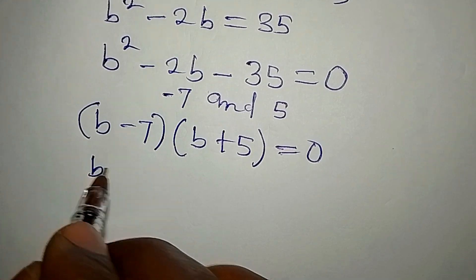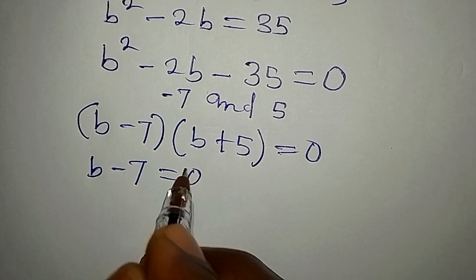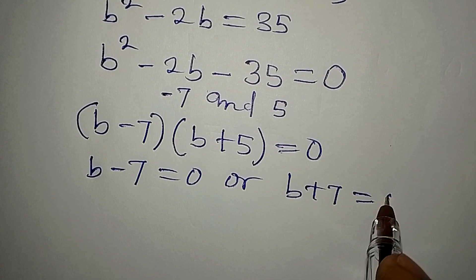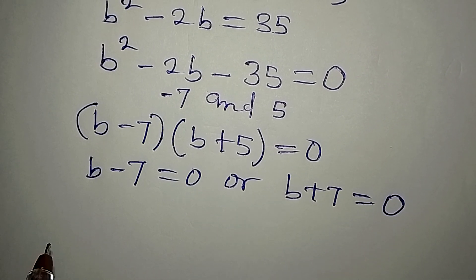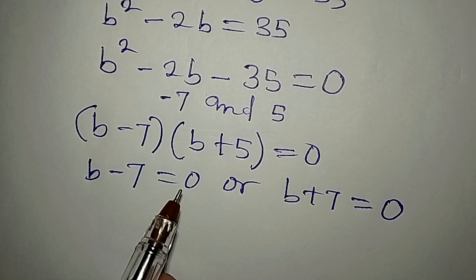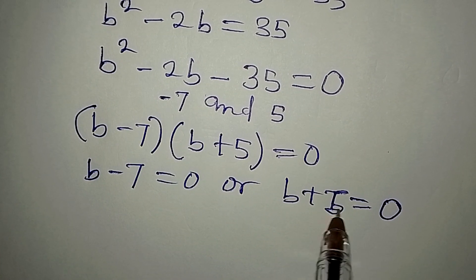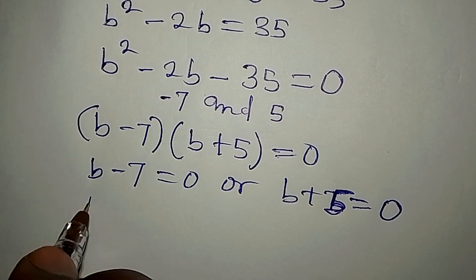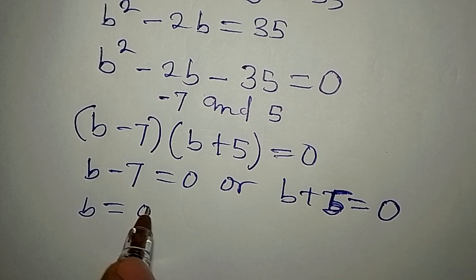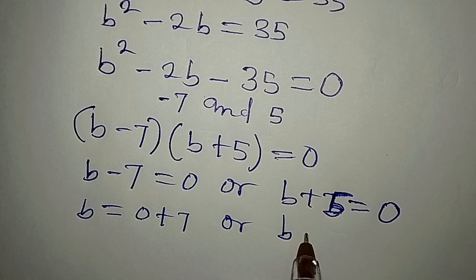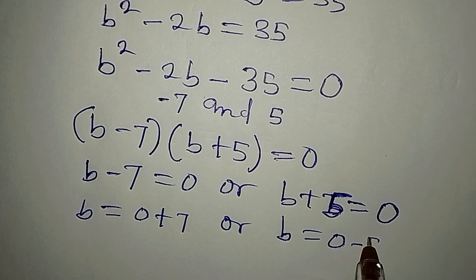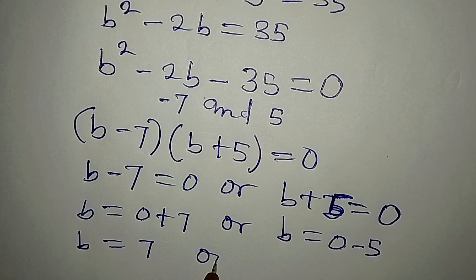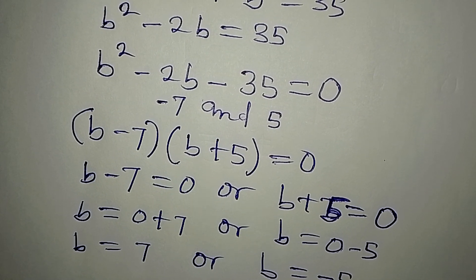Setting each factor to zero: B minus 7 equals zero, or B plus 5 equals zero. Therefore B equals 7 or B equals minus 5.